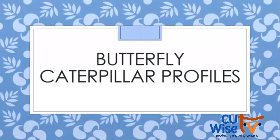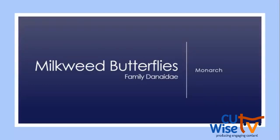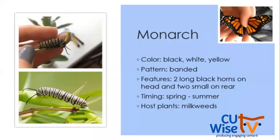We'll start with butterfly caterpillars — first the milkweed butterflies. There are only four species in North America; in Illinois we just have the monarch. When feeding on milkweeds, these caterpillars acquire alkaloids that make them unpalatable to predators. The monarch caterpillar has black, white, and yellow bands along the body, and two long black horns near the head and two small ones near its rear. We can find them spring through summer by planting milkweeds.